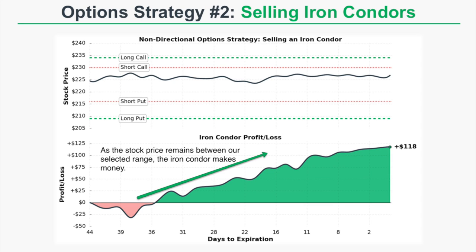At expiration, the stock price is in between our short put and short call strike price, so we realize the maximum profit potential for this iron condor — in this case, $118 from selling this iron condor. Now let's walk through how to actually set up an iron condor with real option prices from today's market.